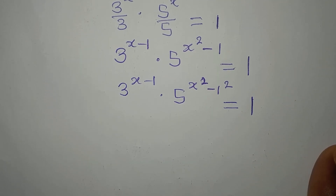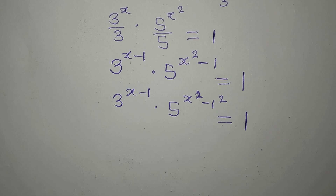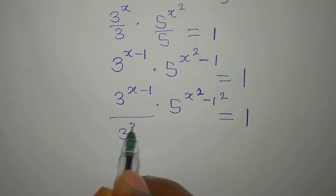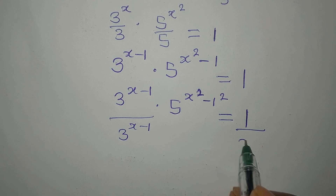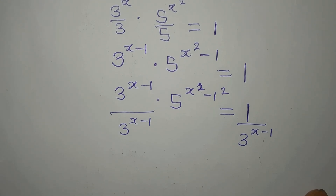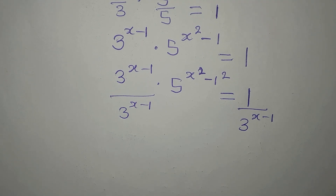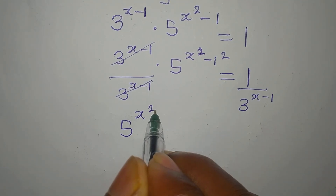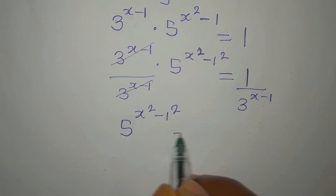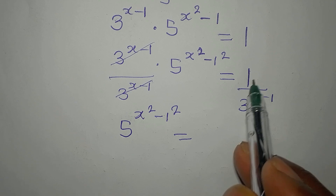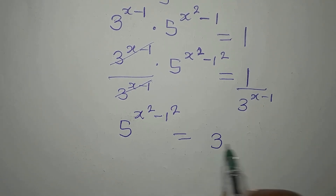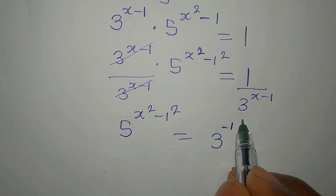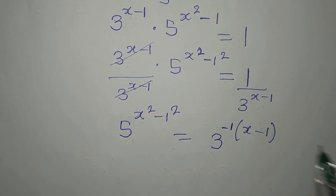From here, let's take the 3^(x-1) to the other side by dividing. So 3^(x-1) cancels and we have 5 to the power of x squared minus 1 squared equal to 3 to the power of negative 1, raised to the power x minus 1. Now, 3 to the power of negative 1 is the same as 1 over 3.